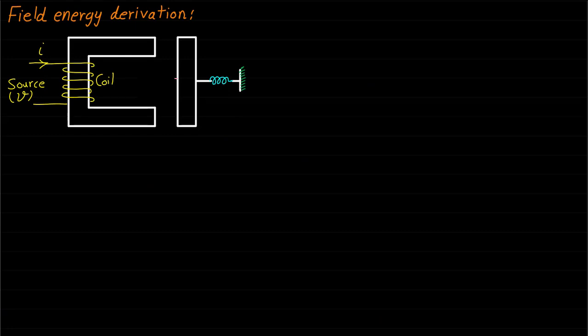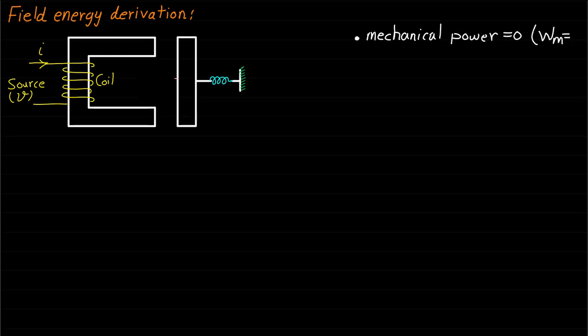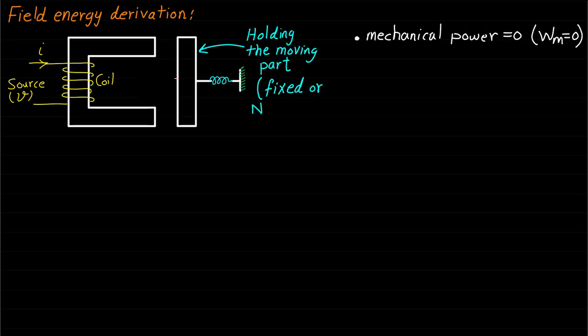To derive an expression for the field energy for this relay system, or any single excited electromechanical energy conversion device, we need to make two assumptions. First, we need to assume that the mechanical power, or the change in mechanical energy, is equal to zero. This can be done by holding the moving part and preventing it from movement. The second assumption is neglecting the power loss.